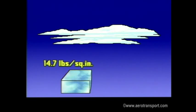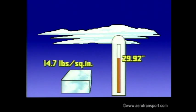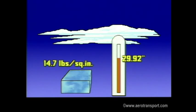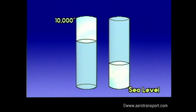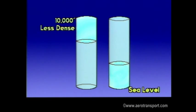Barometric pressure may also be measured in inches of mercury. The pressure at sea level is the pressure required to raise mercury in a barometer to a height of 29.92 inches. As altitude increases, air pressure decreases. Looking at two columns of air, one at sea level and the other at 10,000 feet, notice the column at 10,000 feet has less air in it, therefore less density and a lower air pressure.